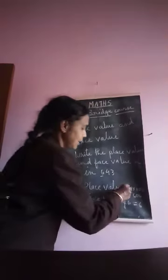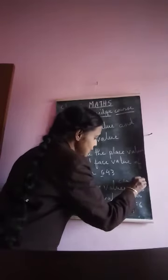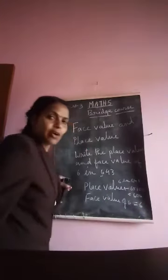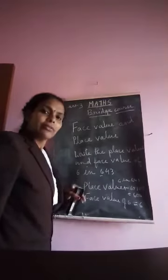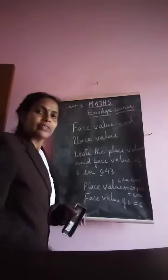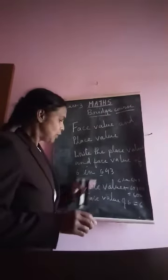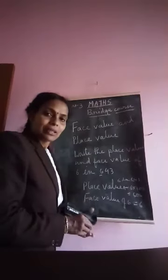So in 643, place value of 6 is 600 and face value of 6 is 6. Face value is the number itself in the numerals. For place value, you make the place value chart and find out. Clear everybody?